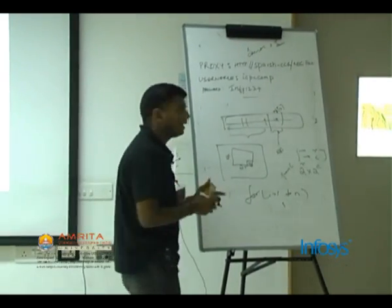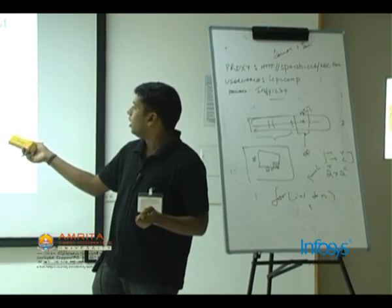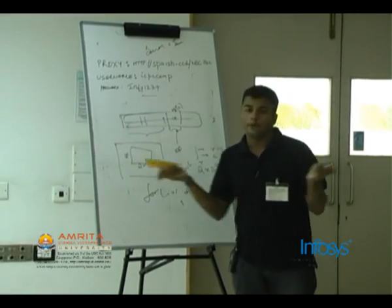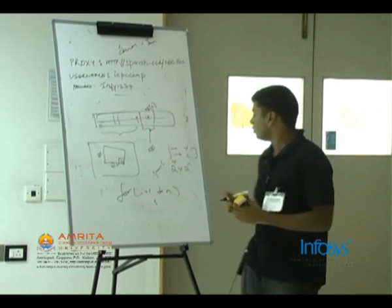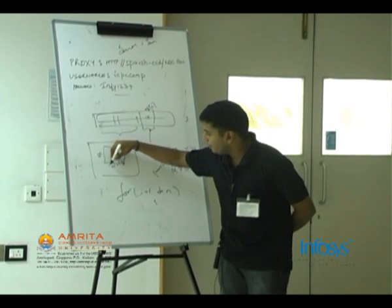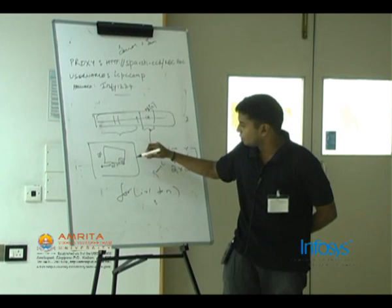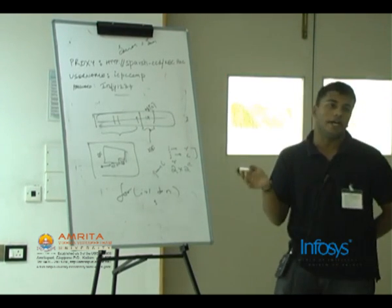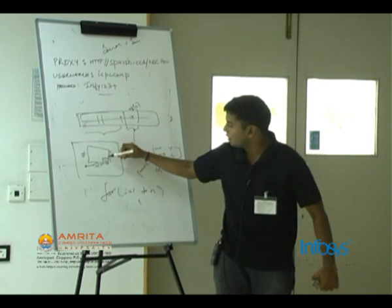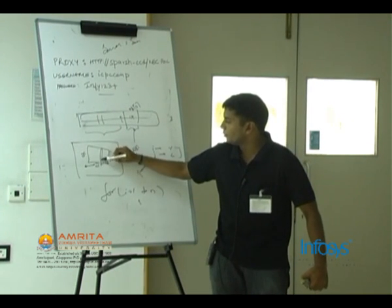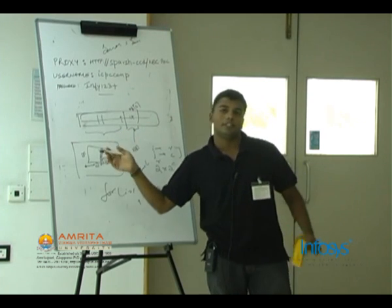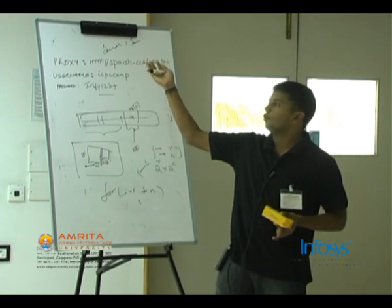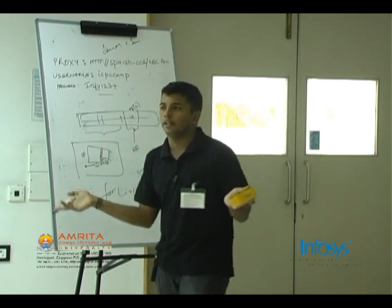The loop invariants and operations are all the same because it's just an extension of the one-dimensional Fenwick tree. For a query, you essentially have two for-loops. What you're doing is decrementing the binary number of i and also decrementing the binary number of j. The complexity would be O(log n)^2 because for every decrement in i you also need to do bookkeeping for j.